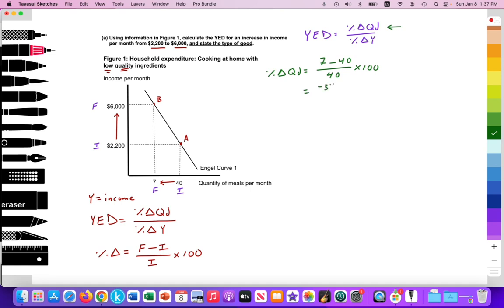So that will equal 7 minus 40, negative 33. So here we have the negative relationship between the two variables over 40, which will multiply by 100 in just a second. That's going to equal negative 0.825 multiplied by 100, and that will equal negative 82.5%.